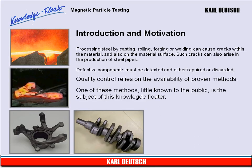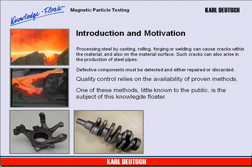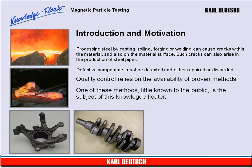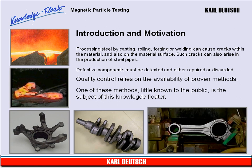Introduction and Motivation. Processing steel by casting, rolling, forging or welding can cause cracks within the material and also on the material surface. Such cracks, which can also arise during the production of steel pipes, must be addressed. Defective components must be detected and either repaired or discarded. Quality control relies on the availability of proven methods. One of these methods, little known to the public, is the subject of this knowledge floater.